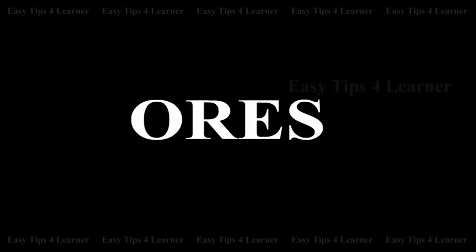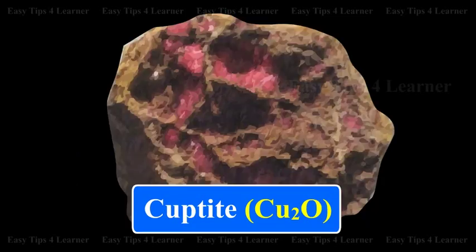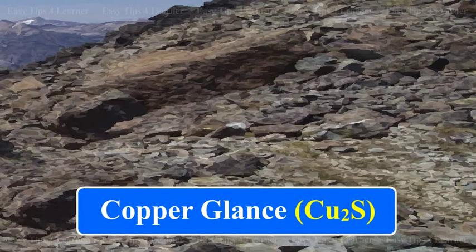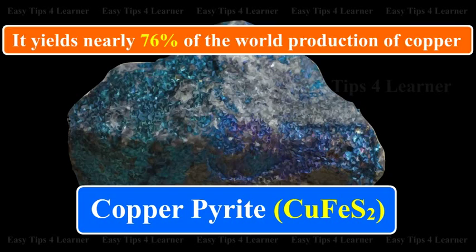Ores of Copper: Copper Pyrite (CuFeS₂), Cuprite or Ruby Copper (Cu₂O), and Copper Glance (Cu₂S). The chief ore of copper is Copper Pyrite. It yields nearly 76% of the world production of copper.